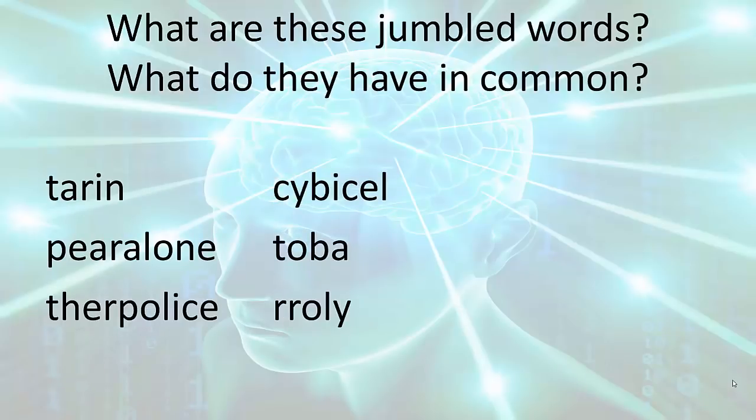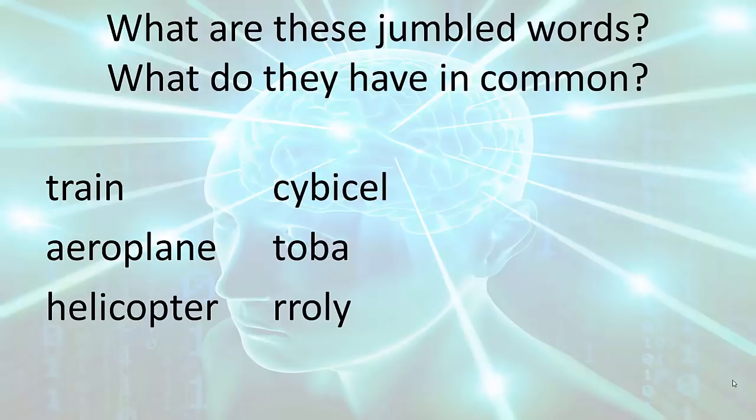And the first word: train. And the second word is airplane. The next word is helicopter. The next word is bicycle. Next: boat. And finally, lorry. So, train, airplane, helicopter, bicycle, boat, and lorry. And these are all ways of getting around or transportation.